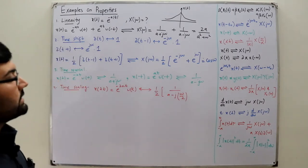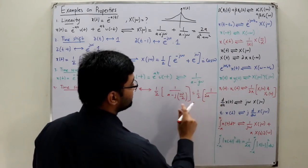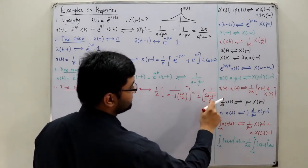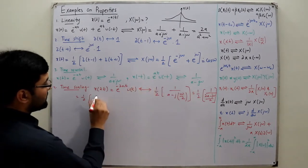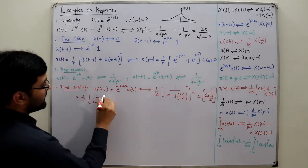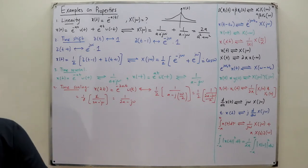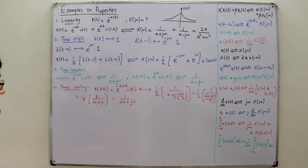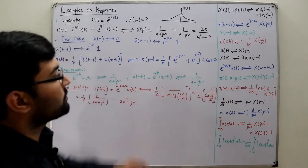Taking the LCM: (1/2) × 2/(2a + jω), the 2s cancel and we get 1/(2a + jω). So the Fourier transform of x(2t) = e^(-2at)u(t) is 1/(2a + jω), which is simply 1/(a + jω) where a is replaced by 2a. This confirms what the time scaling property predicts, and you can verify it using the Fourier transform formula as well.